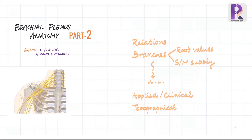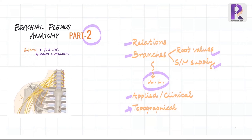Hello and welcome to the second part of the brachial plexus anatomy. We will be learning the relations of its various parts, the 11 side branches and 5 terminal branches in detail with their root values and sensory motor supply covering almost the entire upper limb, further applied and clinical anatomy, and the topographical anatomy of the trunks and terminal branches.